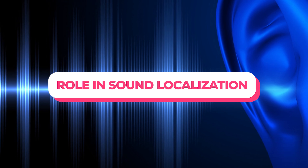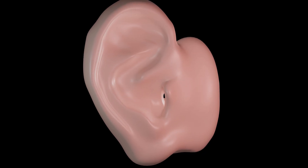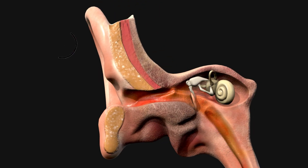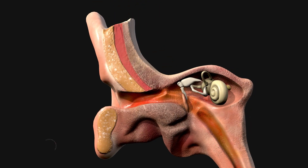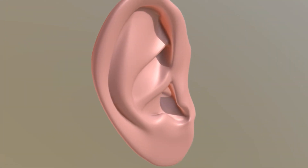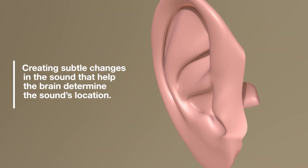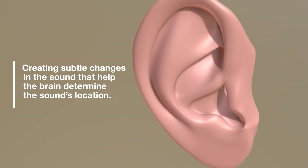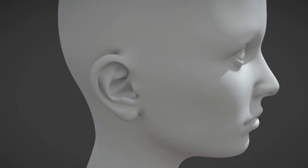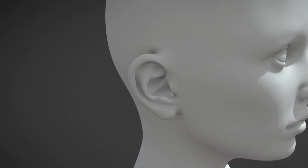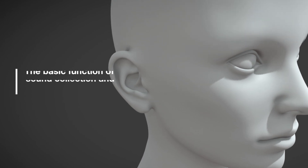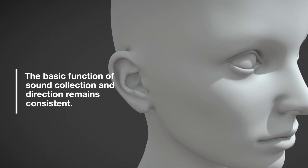The pinna plays a significant role in vertical sound localization — determining whether a sound is coming from above, below, or at the same level as the listener. The folds and contours affect sound waves differently depending on their origin, creating subtle changes that help the brain determine the sound's location. The shape and size of the pinna vary greatly among individuals, and these variations can affect the way sound is perceived, though the basic function of sound collection and direction remains consistent.